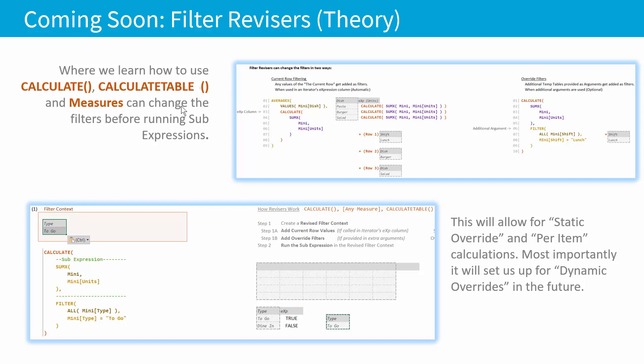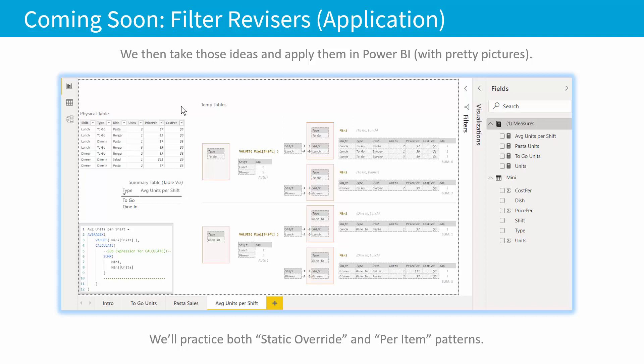When we're done with the chapter on filter revisor theory, we'll move into a chapter on filter revisor application. It's a short chapter where we'll open up Power BI, take all the skills we learned in the theory chapter, and apply them to make sure they work. Should be pretty fun and confidence-inspiring, because you'll actually get to do stuff in Power BI.